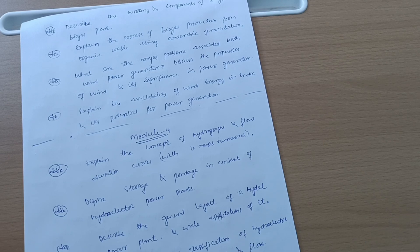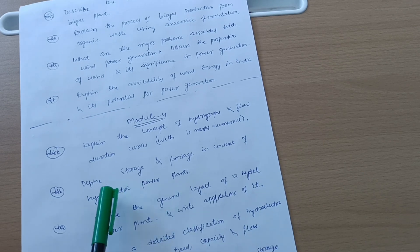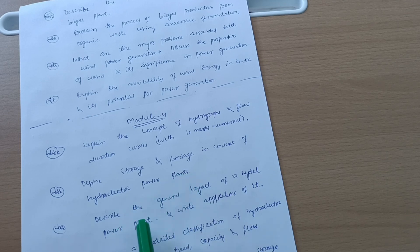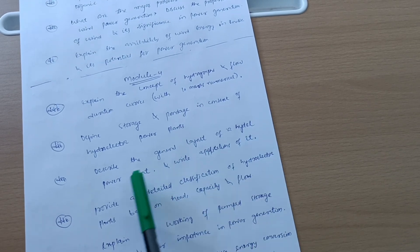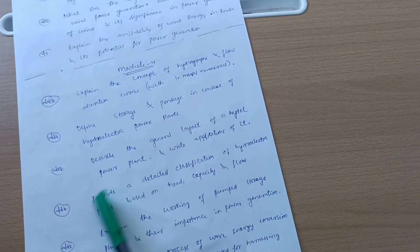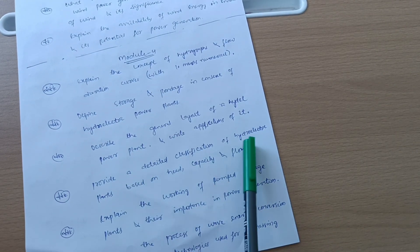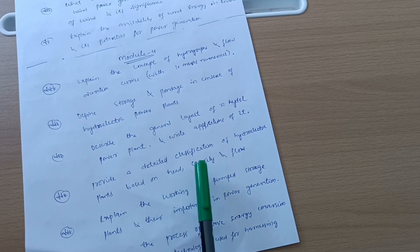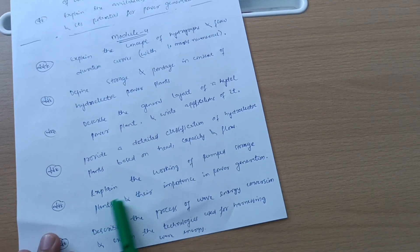Define storage and pondage in context of hydroelectric power plants. Describe the general layout of a hydropower plant and write applications of it - 10 marks question may be there. Provide a detailed classification of hydroelectric plants based on head, capacity, and flow.